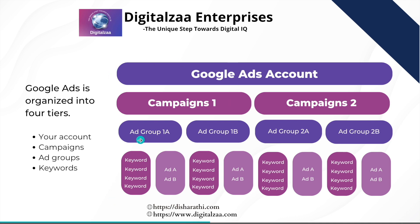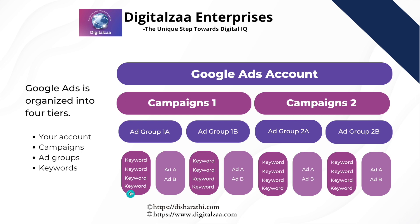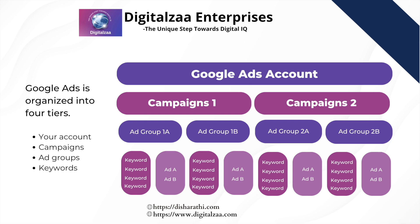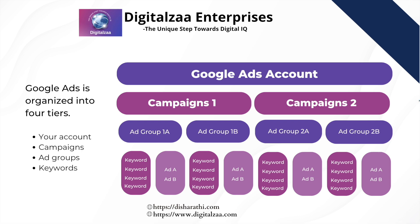In the keywords section, you put keywords relevant only to that specific ad group — for example, for the kids wear boys shirt ad group, you put keywords related only to that. Then you create ad creatives. You can create multiple advertisements and add multiple keywords for a particular ad group. This is the basic structure of Google Ads — in this video I'm just covering the foundational structure.